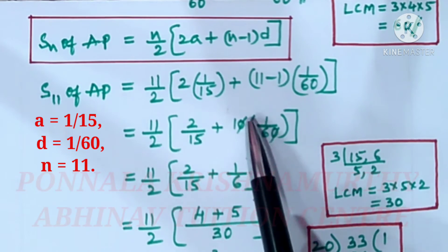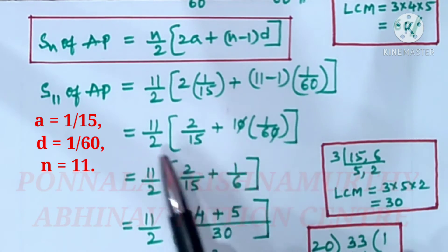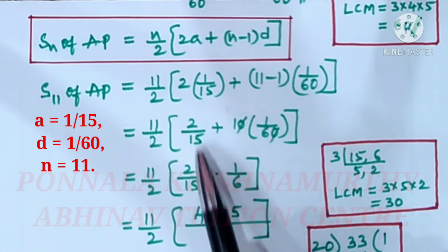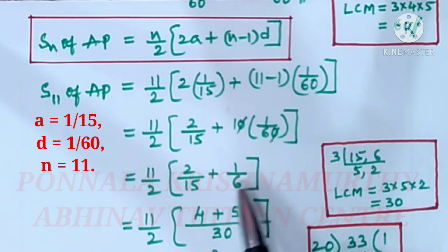Here 0, 0 cancel. This equals 11/2 times [2/15 plus 1/6].